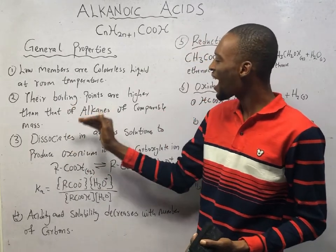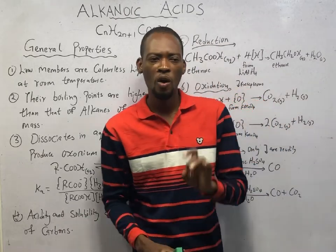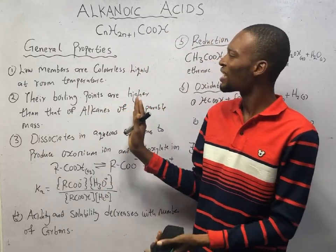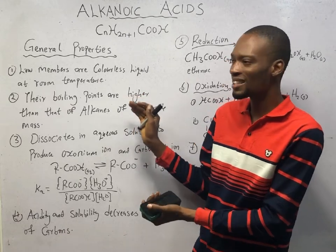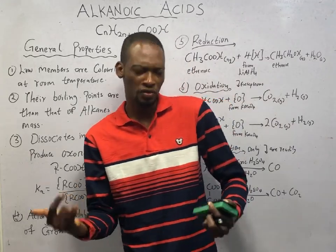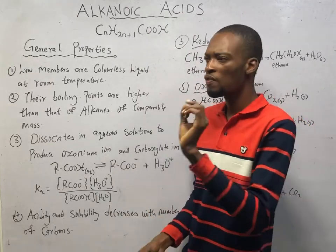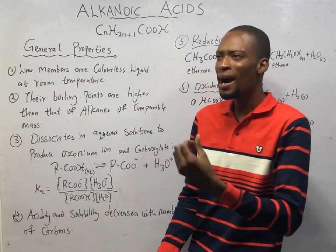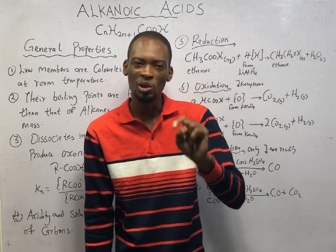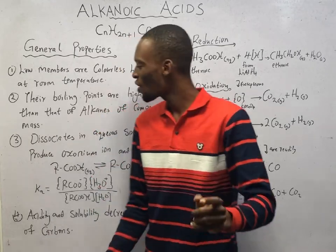Their boiling points are higher than those of alkanes of comparable molecular mass. Generally organic compounds have lower boiling points, but alkanoic acids — compared to alkanes of the same mass — have higher boiling points. This is also true for alkanols. The reason for high boiling points in alkanols and alkanoic acids is simply the presence of hydrogen bonding.